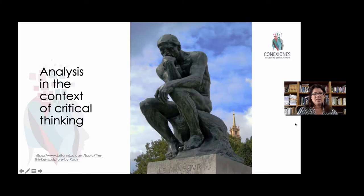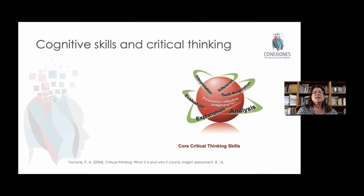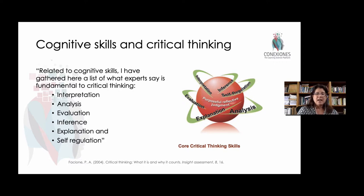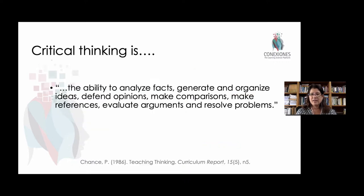If we think of analysis in the context of critical thinking frameworks, we get a slightly different idea. Fatshwani found in 2004 that, related to cognitive skills, there is a list of what experts say is fundamental to critical thinking. Amongst these terms is analysis. You have to interpret information, analyze it, evaluate it. You use inference to fill in those gaps. You have to be able to articulate and explain it. And then you have to self-regulate to stay on task to be able to fulfill that thinking process. So we know that within many critical thinking frameworks, including Fatshwani's, it's very important that we have this level of analysis.